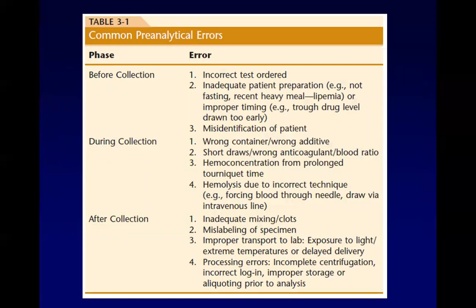Common pre-analytic errors include: before collection — incorrect test order, inadequate patient preparation, and misidentification of the patient; during collection — wrong container or additive, short draws, and prolonged tourniquet time leading to hemoconcentration; after collection — inadequate mixing, clots, mislabeling of specimens, and processing errors.